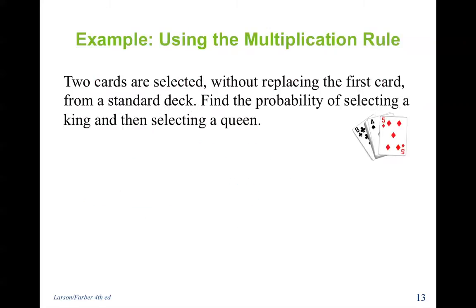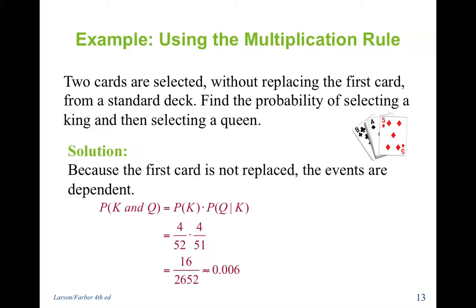Two cards are selected without replacing the first card from a standard deck. Find the probability of selecting a king and then selecting a queen. Because the first card is not replaced, the events are dependent. The probability of king and queen equals the probability of king — 4 out of 52 — times the probability of queen given king — 4 out of 51. Multiplying gives 16 divided by 2652.